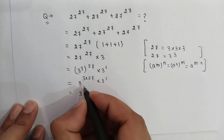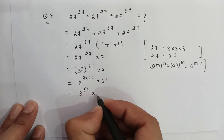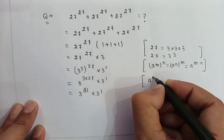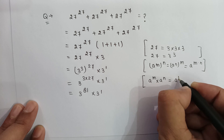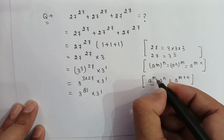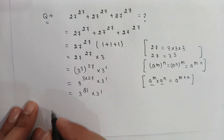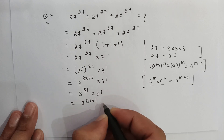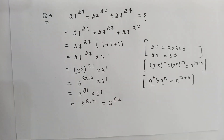It will be 3 to the power 81, since 3 multiplied by 27 equals 81. As we know that a to the power m multiplied by a to the power n can be written as a to the power m plus n, because the base is the same so we can add the powers. So it will be 3 to the power 81 plus 1, which gives us 3 to the power 82, and this is our answer.